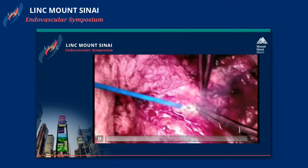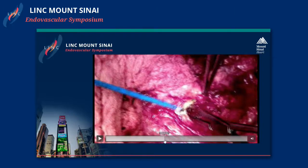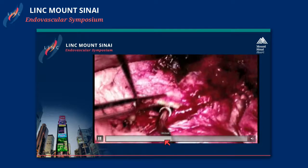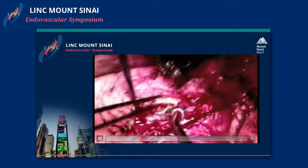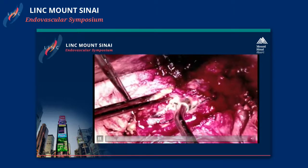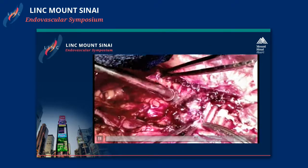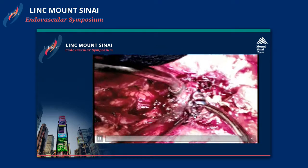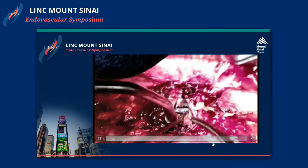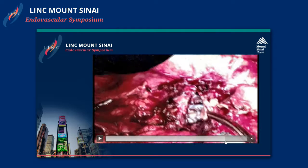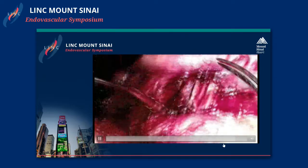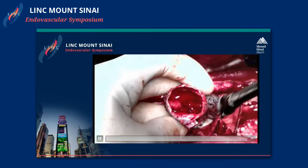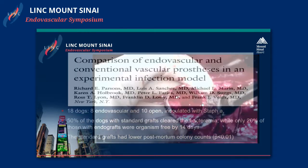After taking down the fistula, we then exposed the graft. This is the native graft — the original graft that was placed. Interestingly, you can see the native graft's suture line was broken, and this is exactly where the fistula was. We got proximal and distal aortic control and took out the stent graft. Preoperatively, we performed an axillo-bifemoral bypass with plugging of the bilateral iliacs.